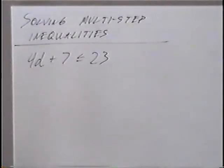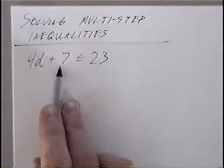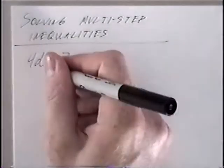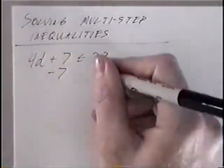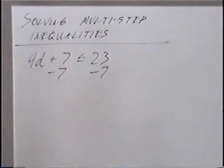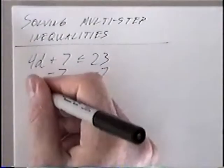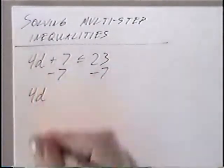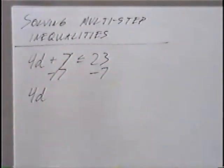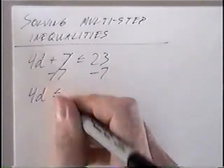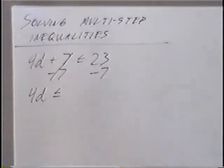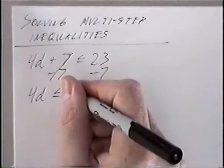We want to solve for the variable and get d by itself. To do that, we first want to get rid of the positive 7. To get rid of adding 7, we can subtract 7 on both sides. 4d would come down, the 7s would cancel. The inequality would stay the same — if you add or subtract a number it does not switch. And 23 minus 7 would be 16.